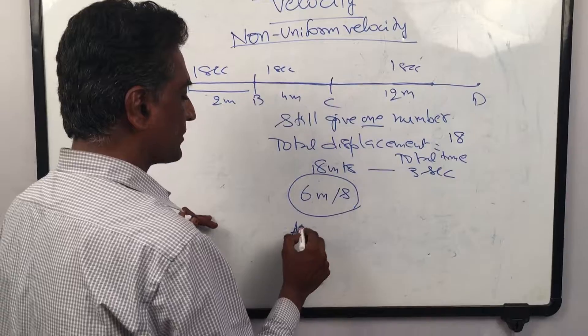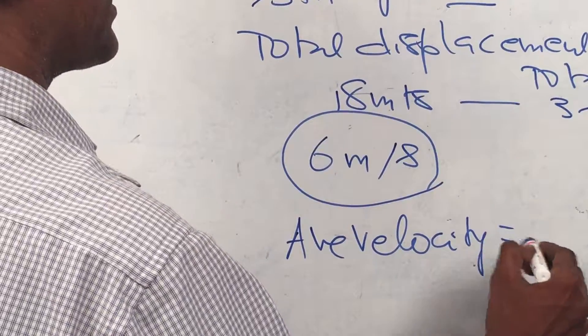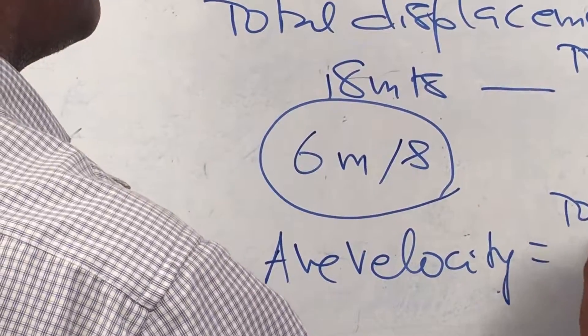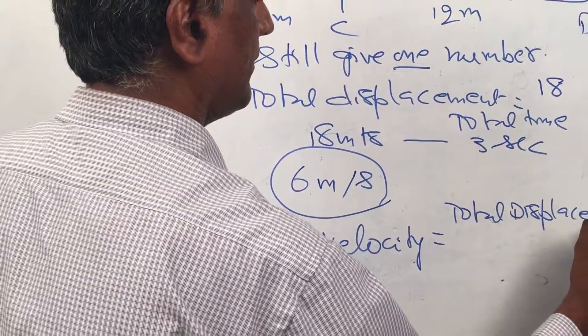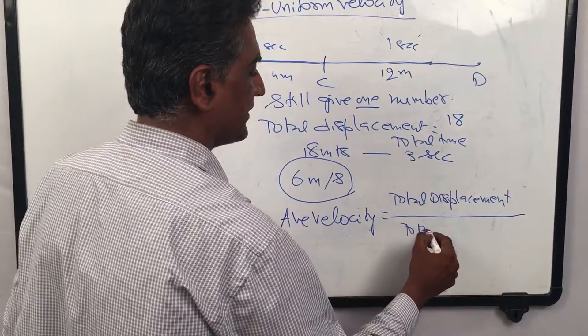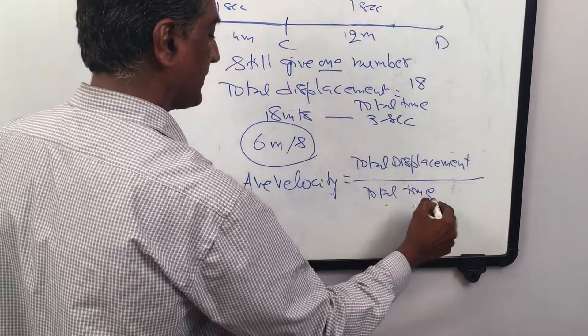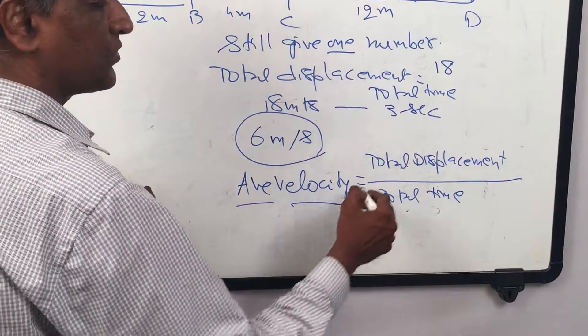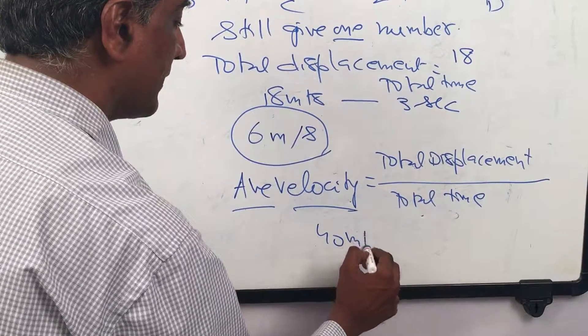So the average velocity formula—and this is not a mathematical formula, it is a physics formula—total displacement by total time. If it's speed, it will be total distance by total time. So total time.